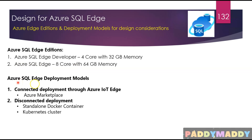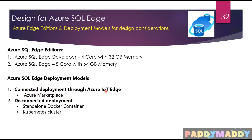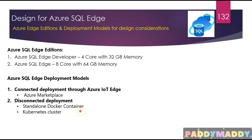For Azure SQL Edge deployment models, there are two options. The first is connected deployment through Azure IoT Edge, which is available directly from the Azure Marketplace and can be deployed as a module for IoT Edge applications. The second is disconnected deployment, available as Azure SQL Edge container images that can be pulled from Docker Hub, deployed through a standard Docker container, or deployed on a Kubernetes cluster.